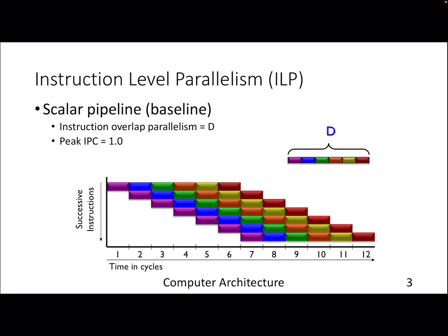To understand the difference between a pipeline design and a superscalar design, let's understand the notion of Instruction Level Parallelism, or ILP — that tells us how many instructions are actually being executed at a given instance of time. In a five-stage or d-stage pipeline, at any given point of time you'll find that there are d instructions concurrently getting executed. That's the ILP, and the IPC is one because we are pumping one instruction per cycle.